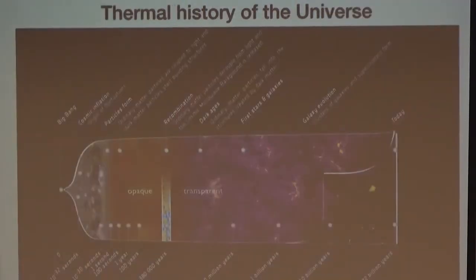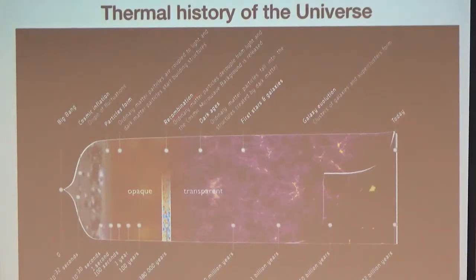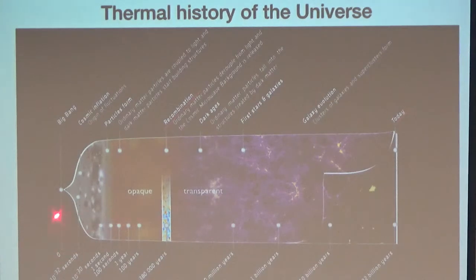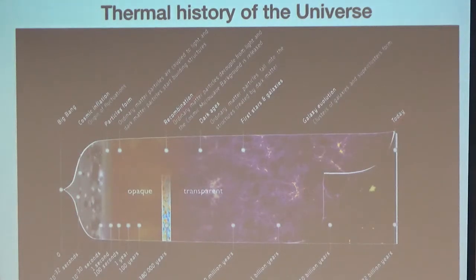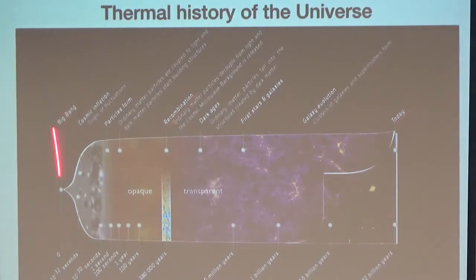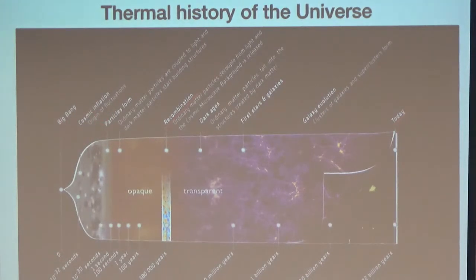The universe cools down as it expands, and this has important consequences. This figure summarizes the important events during the expansion of the universe. Everything started around the Big Bang — we just don't know what's going on there. There is a huge step introduced because we believe in the early universe there was a phase called inflation — a phase of accelerated expansion where the scale factor increased by orders of magnitude.